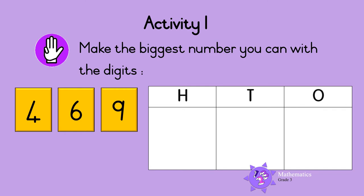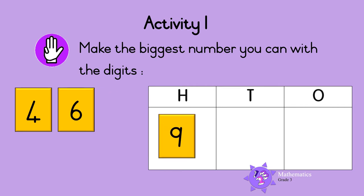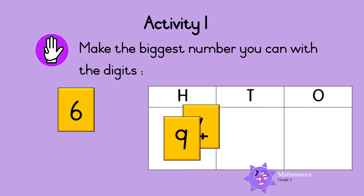Here is another one. The digits are four, six, and nine. To make the biggest number, write the digit with the highest value in the hundreds column. Nine is the highest number, so nine goes in the hundreds column. Write the digit with the lowest value in the ones column.